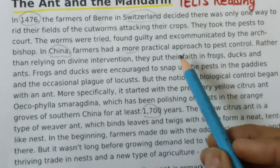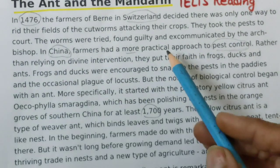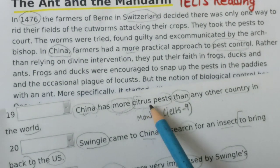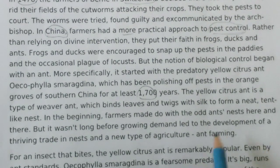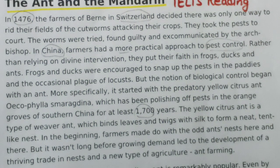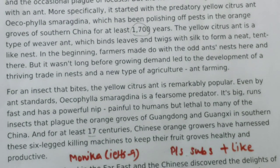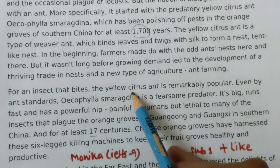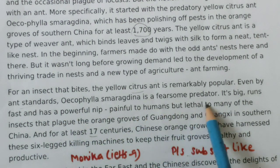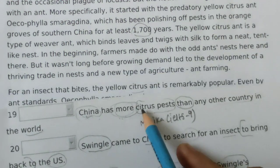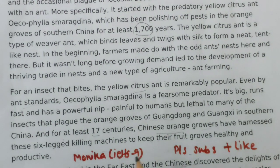In the first paragraph, they explain pest control, but we are looking for 'citrus pest.' The most important keyword to find the location is 'citrus pest' and also 'China.' We found China, but citrus pest is not there. You can pause the screen and check. In the second paragraph, they mention 'for an insect that bites yellow citrus' — citrus is there — but we are looking for 'citrus pest.' Reading the paragraph further: 'orange growers have had' — still no 'citrus pest.'